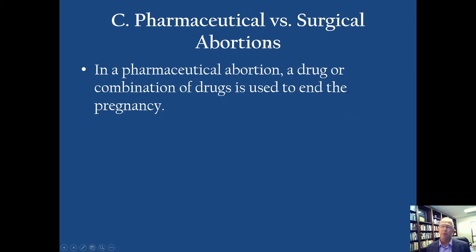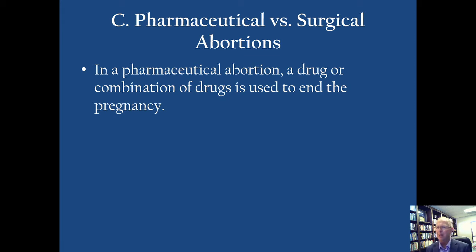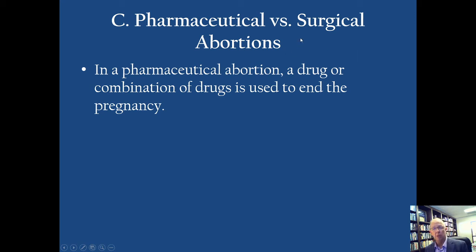I want to clarify for you two big categories within that, now that we've talked about the reasons why people get abortions — elective versus the others. There are two big categories. I call them pharmaceutical versus surgical abortions. Pharmaceutical abortion refers to someone taking a drug in order to end the pregnancy. These are frequently called medical abortions, but I use the term pharmaceutical to indicate that a drug is given to end the baby's life. Surgical abortions occur when a specific procedure occurs — an intrusion is made into the woman's body via a surgical procedure.